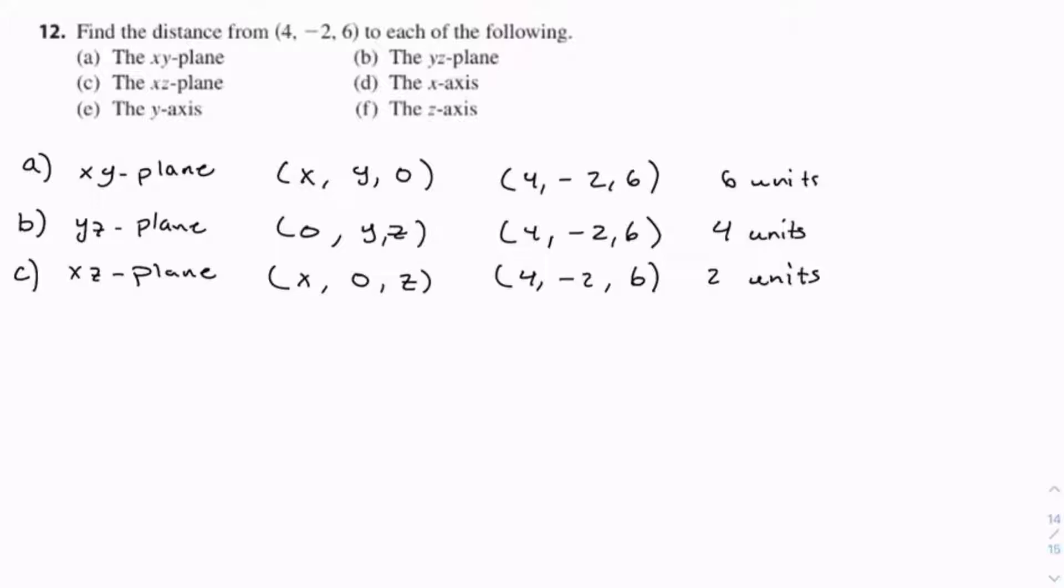Now try to think of how you could represent the x-axis in points that are bounded and not bounded. If you got that x was not bounded and the y and z components had to equal 0, you got it right. So x can equal anything, as long as y and z equal 0.